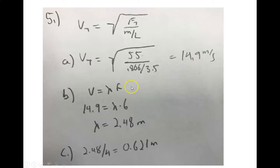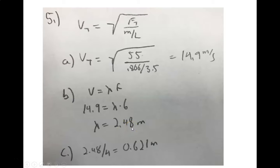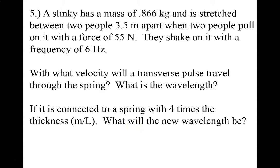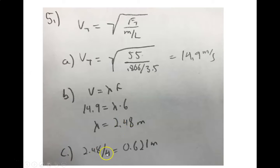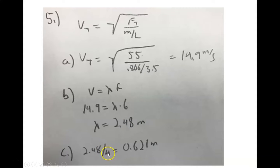The next part: what is the wavelength? Using v = λf, where v is 14.9 m/s and f is 6 Hz, the wavelength equals 2.48 meters. For part C, if connected to a spring with four times the mass per unit length, the velocity changes by the square root of four, which is two. So the new wavelength would be 1.24 meters. Sorry about the mistake there — it should be the square root of two, not four.